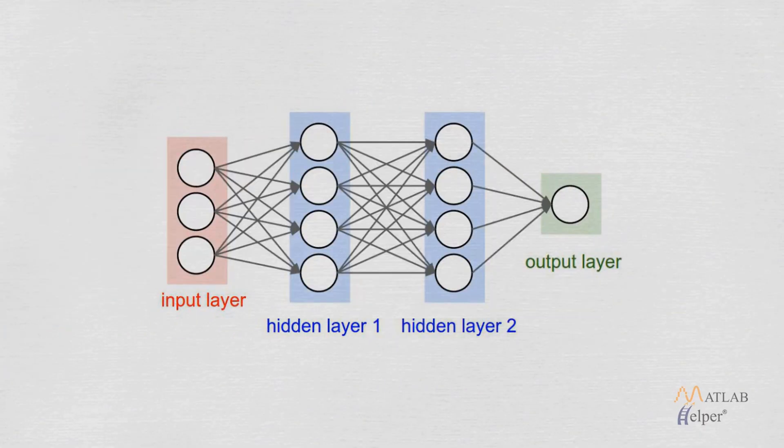So this shows the pictorial representation of a simple neural network with two hidden layers, each having four neurons and three inputs and one output.